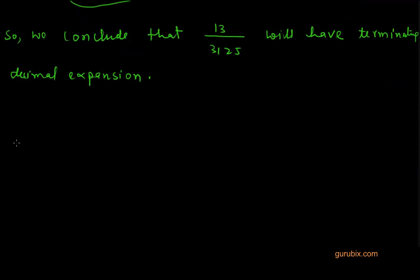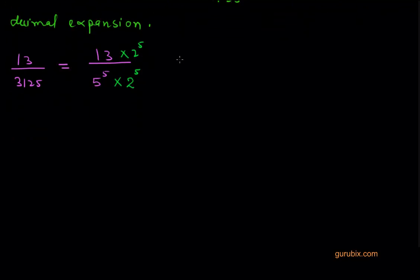Now we shall move to the next part of the question. We shall find out the decimal expansion of this rational number 13 over 3125, and it is very easy. We have factorized the denominator of this rational number like this, 5 to the power 5. Now we shall multiply denominator and numerator with 2 to the power 5 and calculate this term like this. So if we multiply, 10 to the power 5 is 13 into 2 to the power 5 means 32.